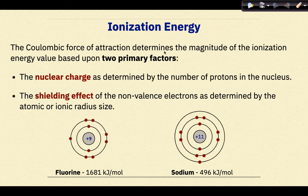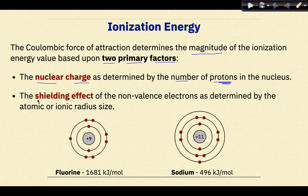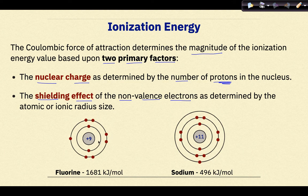The Coulombic force of attraction determines the magnitude of the ionization energy value based upon two primary factors: the nuclear charge, as determined by the number of protons in the nucleus, and the shielding effect of the non-valence electrons as determined by the atomic or ionic radius size. Fluorine has an ionization energy of 1681 kilojoules per mole because the atomic radius is relatively small. Sodium, on the other hand, has a larger atomic radius, so removing its one outer valence electron only requires 496 kilojoules per mole.